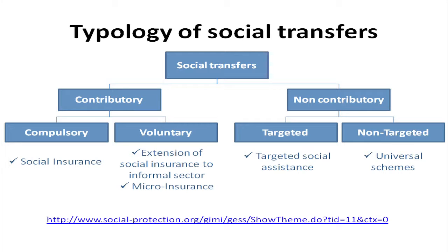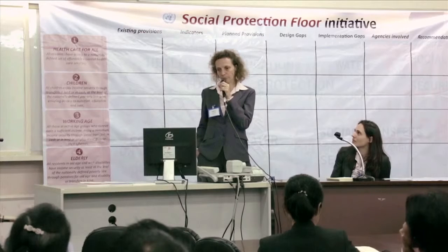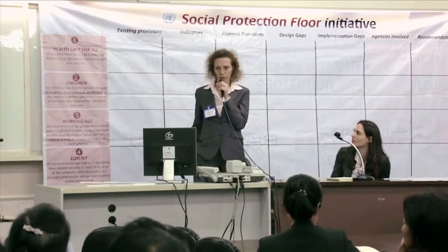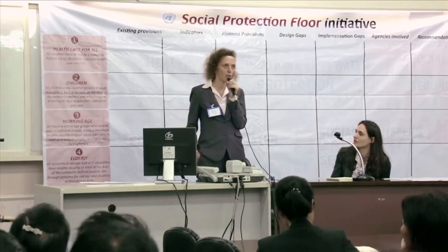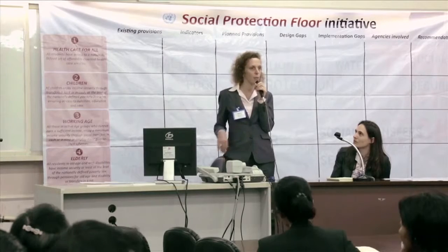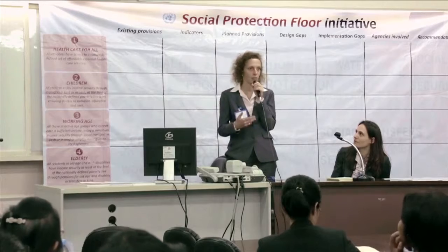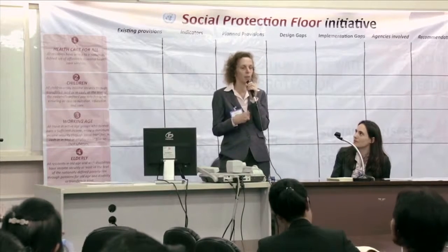Under contributory schemes, you have social insurance types that usually provide compulsory protection. People in the formal sector are required by law to register under social security schemes. You also have voluntary schemes — for instance, a mutual or group of people who want to get social insurance for their members. This is the case in Thailand, where the social security organization tries to expand coverage to the informal sector through voluntary membership funds.